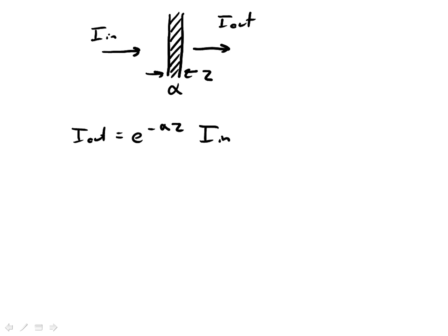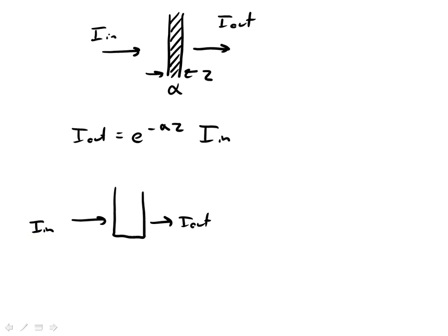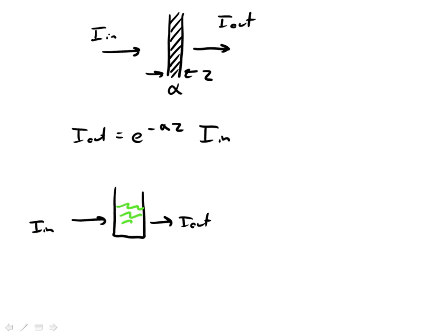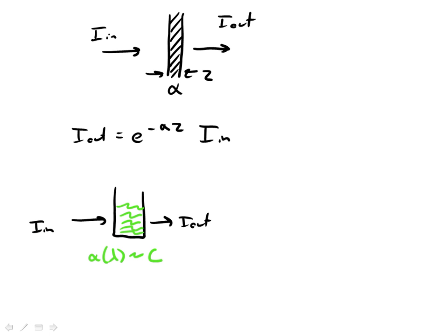What's a little bit more interesting is if we change this problem so that we have a cell of liquid. Let's put some intensity coming in, I_in. Intensity coming out, I_out. Let's fill this with some kind of horrible, nasty green liquid. And we'll say inside this liquid, alpha is a function of wavelength. And remember, it's also proportional to the concentration of the liquid.